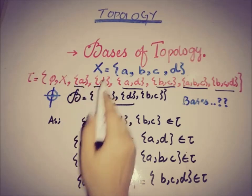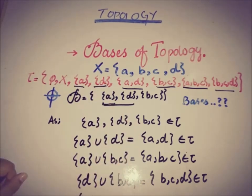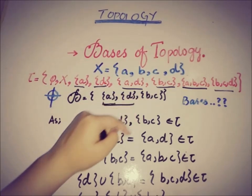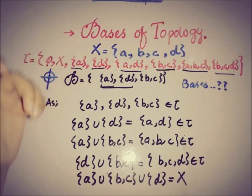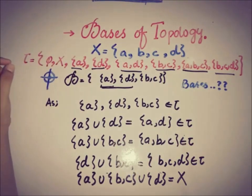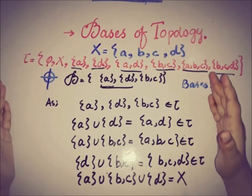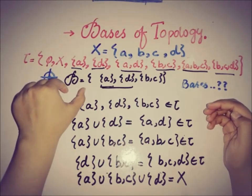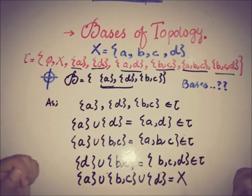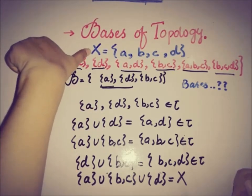There is one more thing: the union of {a}, {d}, and {b, c} gives {a, b, c, d}, which is X itself. For the empty set, we take the empty union of elements of the basis. This shows that every open set in tau is the union of some members of the basis B, which implies that B is a basis of the topology on X.